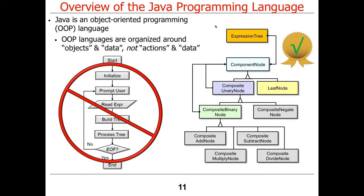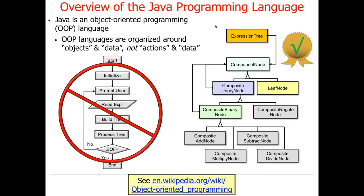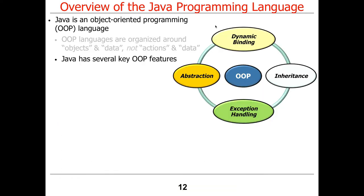In an object-oriented language, the features that are provided are organized around objects and data, as opposed to functions and actions. That's an important distinction. In Java historically, we didn't really think about functions very much — we thought about how things were grouped in the form of classes and so on.